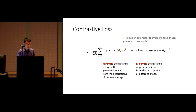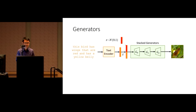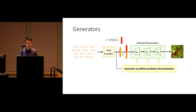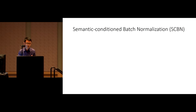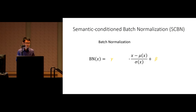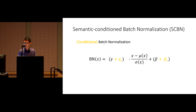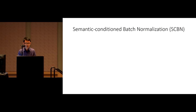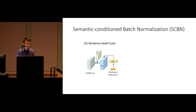We introduce a hyperparameter alpha to avoid fake images being generated too closely, even though the two input descriptions are from the same image with the same semantics. The generators of our SDGAN follow the stack mechanism and contain the proposed Semantic Condition Batch Normalization (SCBN). The purpose of SCBN is to reinforce the visual-semantic embedding in the feature maps of generative networks, enabling linguistic embedding to manipulate feature maps by modulation parameters based on semantic conditions. Given a sentence-level feature vector, we use an MLP to calculate the modulation parameters.